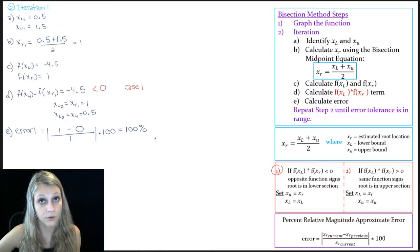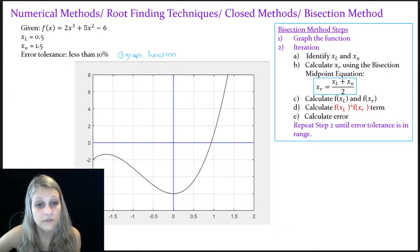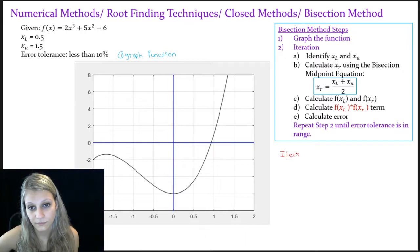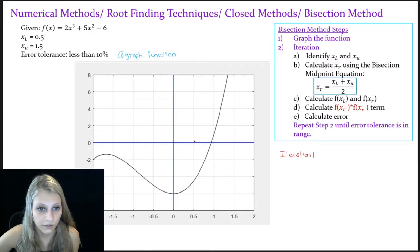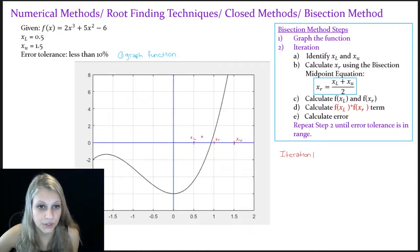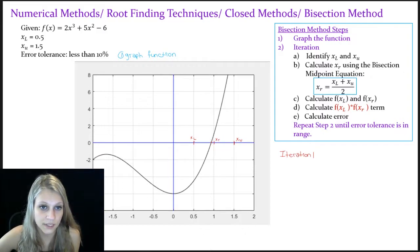Before we do that, I'm going to go back to my graph and give you a visual representation of what we just did. This is my lower bound and this is my upper bound. I calculated that my root estimate is right here. This is my lower section and this is my upper section. I determined that my actual root is in the lower section, so I got rid of the upper one.